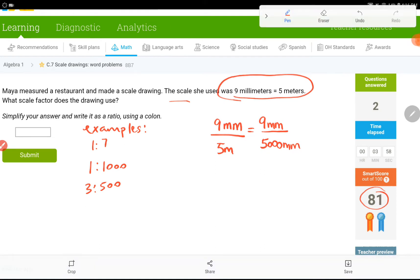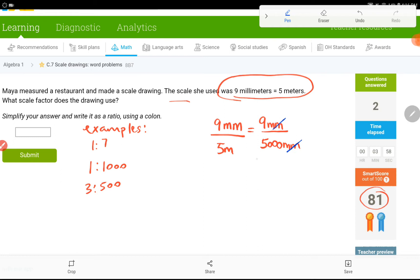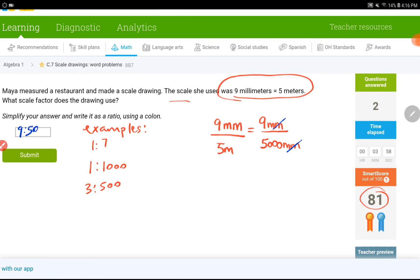If you still don't know the conversion or how to convert these two from one to the other, you can just Google it and then figure it out. And then next, we drop the units because we have the same unit in the numerator and denominator. So, they are gone and then 9 to 5,000 would be my answer.